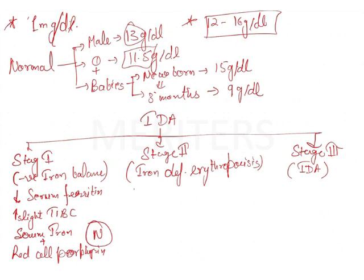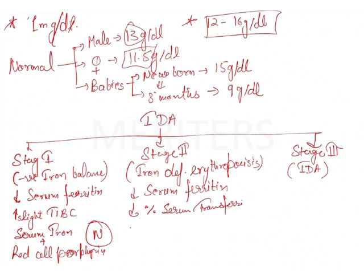In stage two, you will see reduced serum ferritin since it is the storage form of iron. There will also be decreased percentage saturation of serum transferrin. The TIBC, which was only slightly increased in stage one, becomes markedly increased here. The red cell morphology remains normal in stage two.